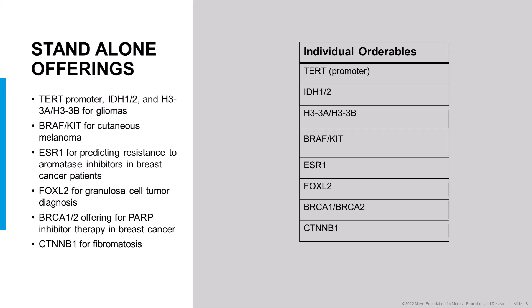Finally, I'm going to end with a discussion of our standalone offerings — orderables that consist of one or two genes helpful for various tumor types. We offer TERT promoter testing, IDH1 and IDH2 testing, and histone H3A and H3B testing for gliomas. We have a standalone test for BRAF and KIT for cutaneous melanoma, a standalone test for ESR1 for predicting resistance to aromatase inhibitors in breast cancer patients, FOXL2 testing for making a diagnosis of granulosa cell tumor, BRCA1 and BRCA2 testing for predicting whether breast cancer patients will respond to PARP inhibitors, and CTNNB1 testing for desmoid fibromatosis.